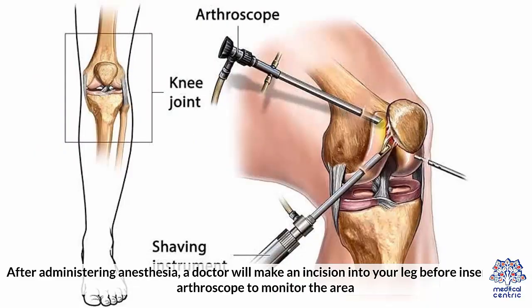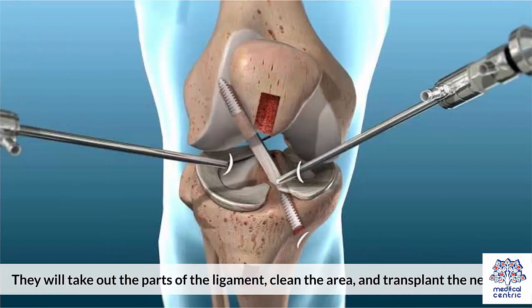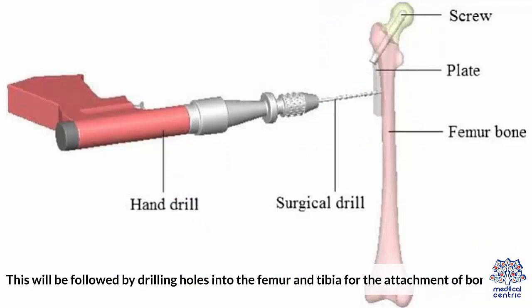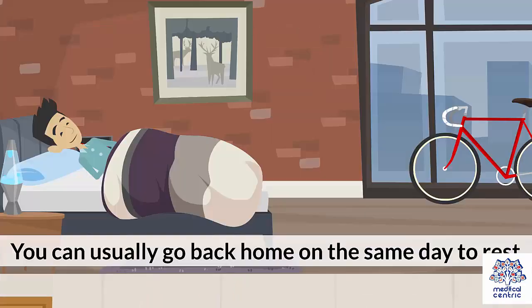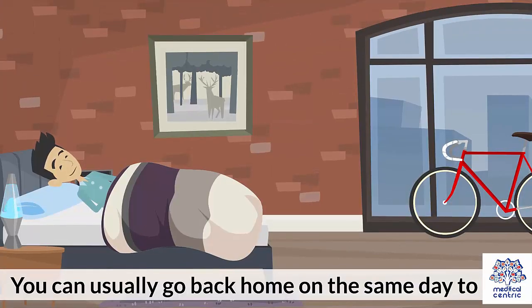After administering anesthesia, a doctor will make an incision into your leg before inserting an arthroscope to monitor the area. They will take out the parts of the ligament, clean the area, and transplant the new one. This will be followed by drilling holes into the femur and tibia for the attachment of bone plugs. The surgeon will check your knee's mobility to test the effectiveness of the transplant before patching the leg up. You can usually go back home on the same day to rest.